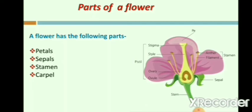Petals are the colorful parts of a flower that attract bees and butterflies with their bright color. Sepals are green leaf-like structures that protect the flower when it is a bud. Stamen is the male part of a flower. It is made up of the anther and the filament. The anther is a yellowish, sac-like structure that carries pollen. The filament is a thread-like structure which supports the anther.